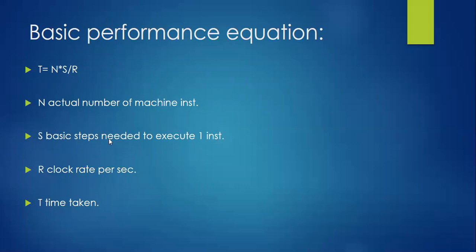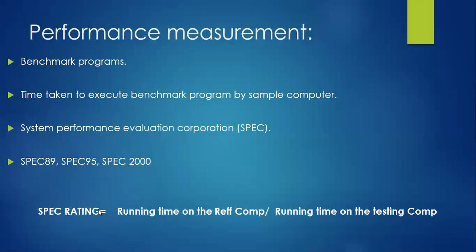So if you multiply number of instructions by number of basic steps and divide by the clock rate R, the result is the time taken by your processor to complete that particular task. This is how we measure and check the performance of our system.